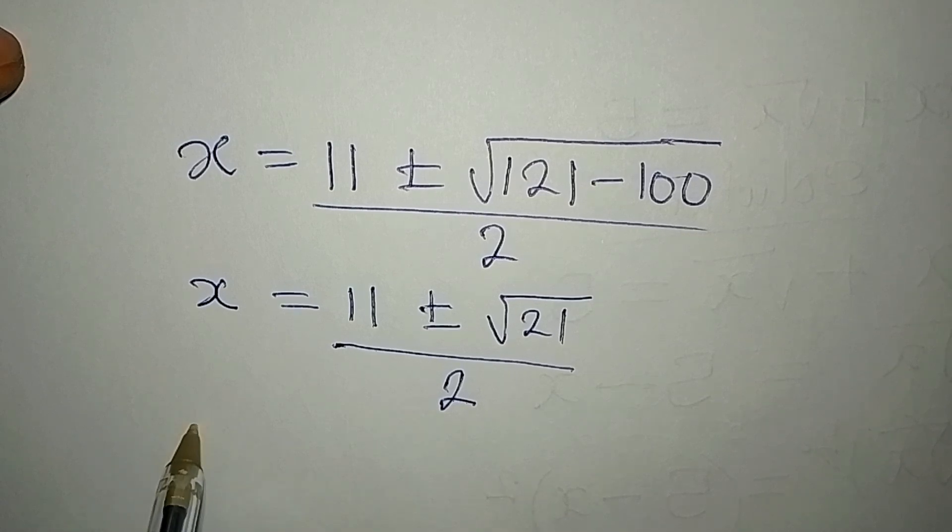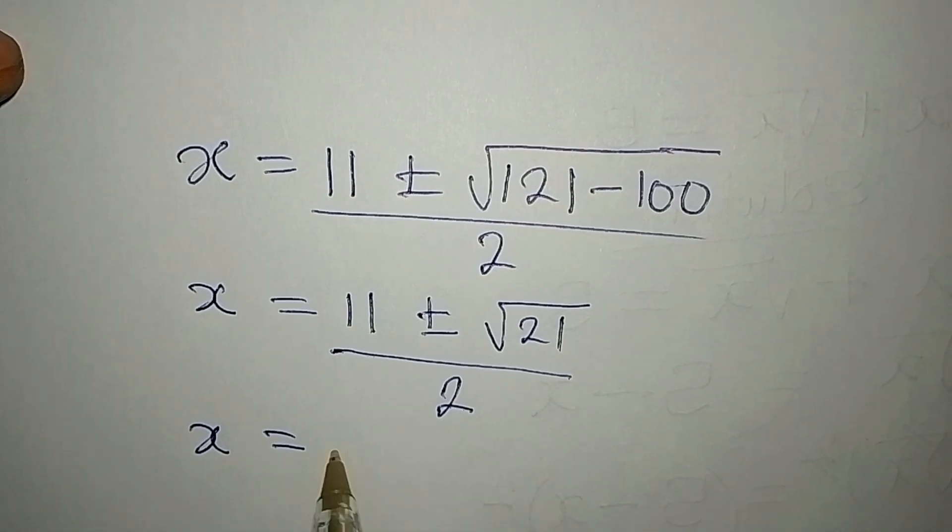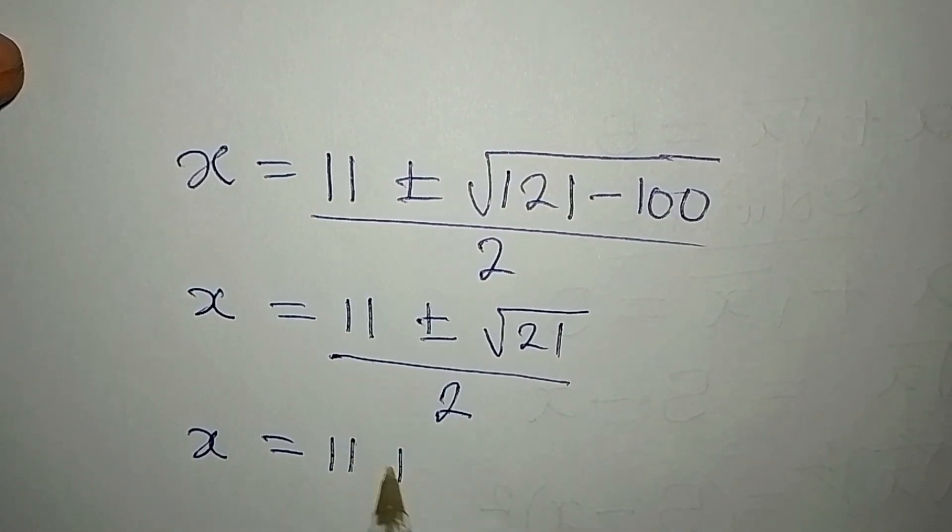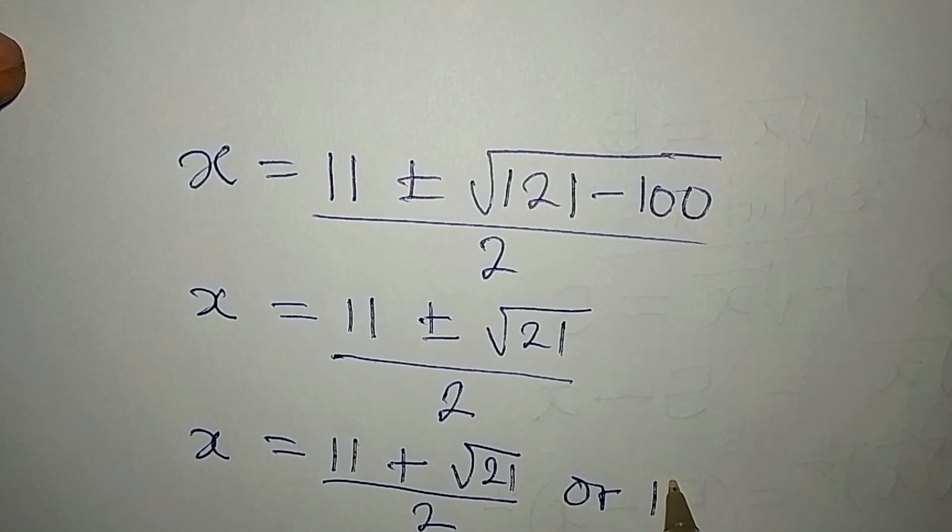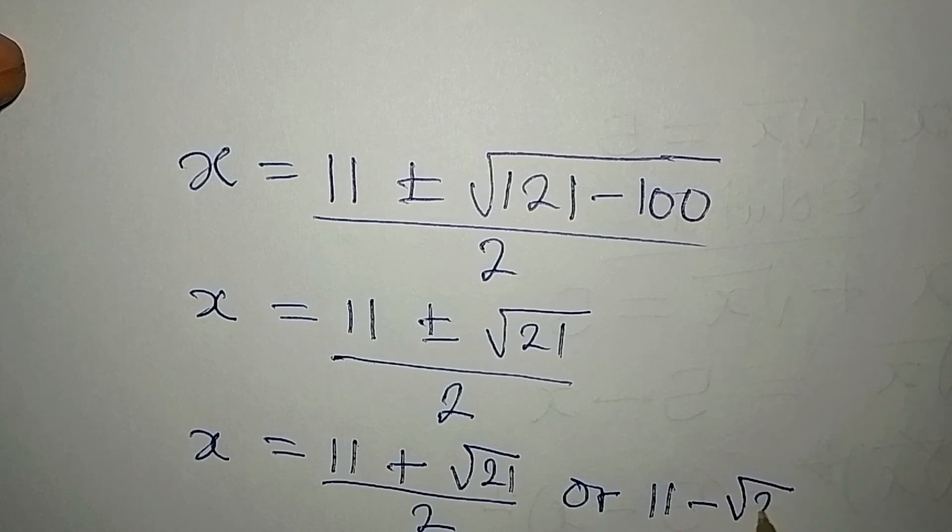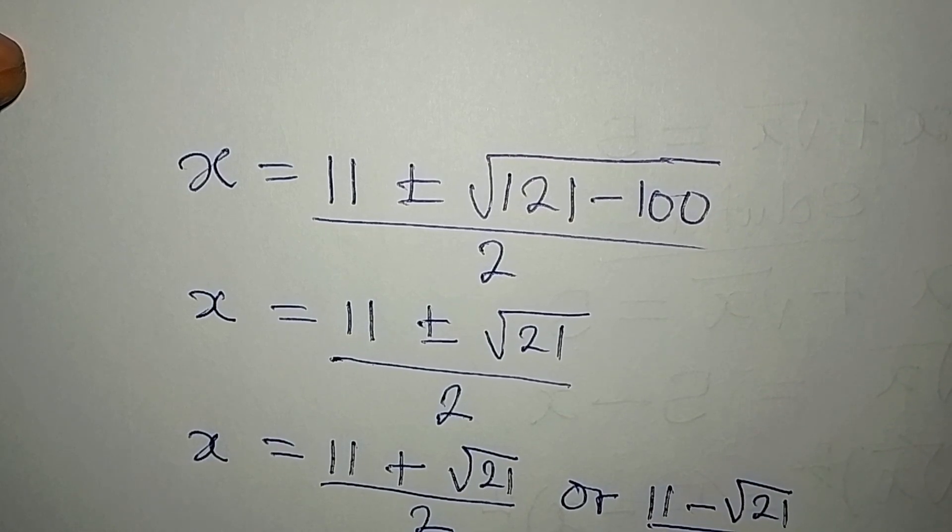So now we have 2 solutions. Our x will be equal to 11 plus square root of 21 over 2, or 11 minus square root of 21 over 2.